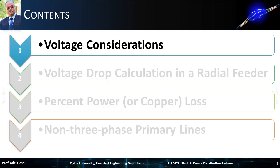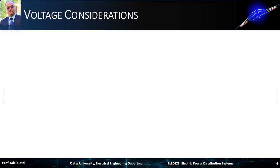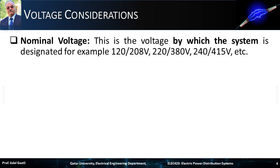Let me start with the voltage considerations. I will start with some important definitions related to the voltage. The nominal voltage is the voltage by which the system is designated, for example 120 phase voltage and 208 line voltage, 220-380 volts, 240-415 volts, etc.